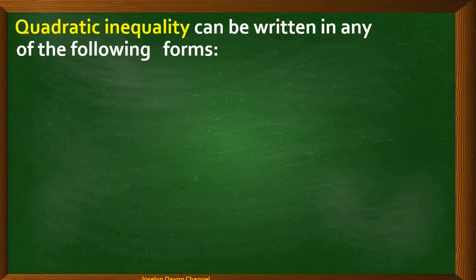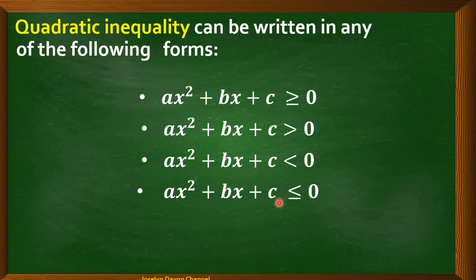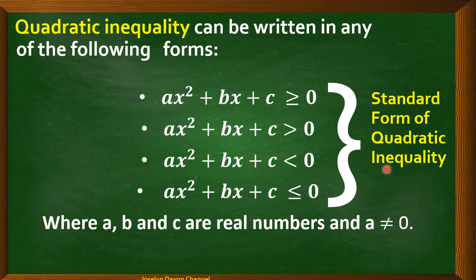Let us familiarize the standard form of quadratic inequality. It can be written in any of the following forms: ax² + bx + c ≥ 0, ax² + bx + c > 0, ax² + bx + c < 0, or ax² + bx + c ≤ 0. All of these are quadratic inequalities in standard form.